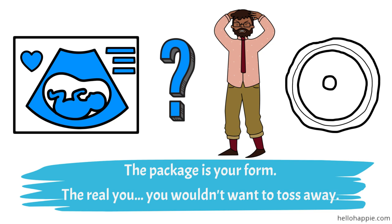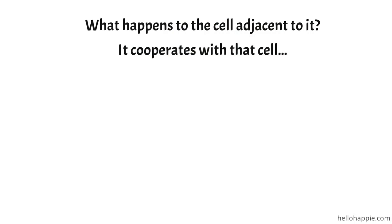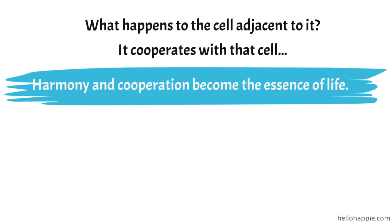Now, when there is harmony within a cell, within a tiniest cell you can find in your body, what happens to the cell adjacent to it? It cooperates with that cell. It doesn't eat it up. It doesn't try to hurt it. It doesn't try to destroy it. It is at peace. It is at harmony. And so harmony and cooperation become the essence of life.